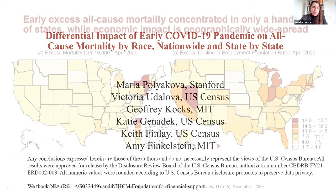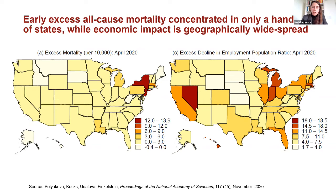This project was motivated by an observation that early excess all-cause mortality was concentrated in only a handful of states, while the economic impact of COVID-19 seemed to have been geographically much more widespread in the first full month of the pandemic in April 2020. Two maps are shown: excess mortality for April 2020 was essentially concentrated in New York and New Jersey, while excess declines in employment-to-population ratio from the CPS survey showed pronounced declines across many more states.